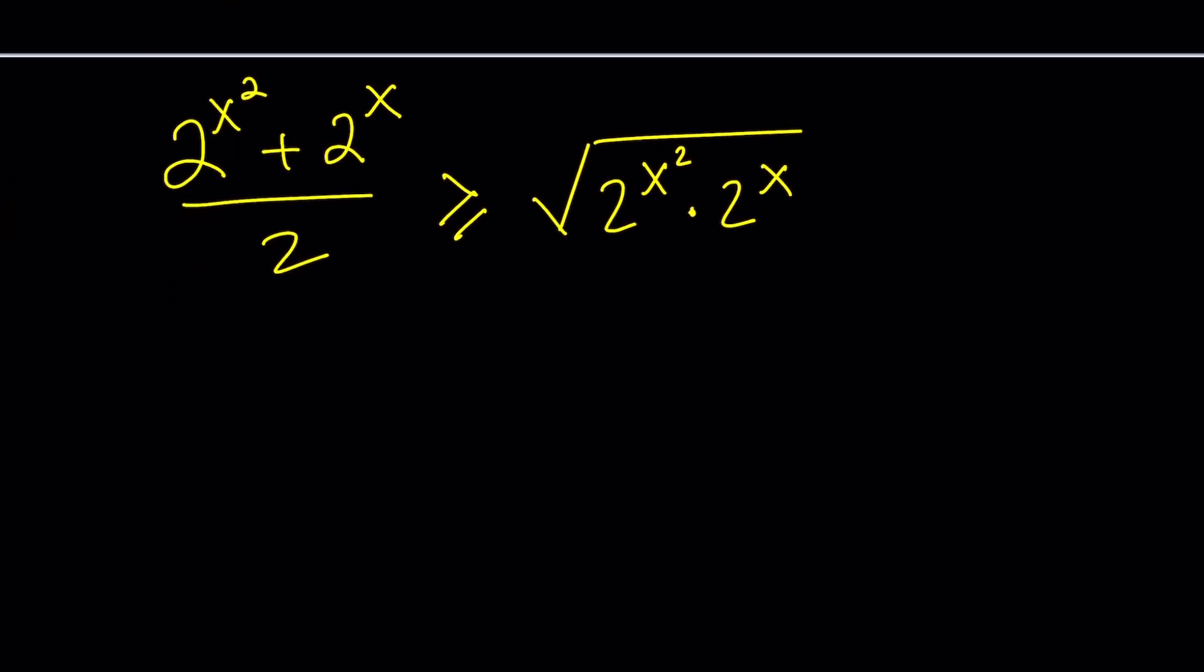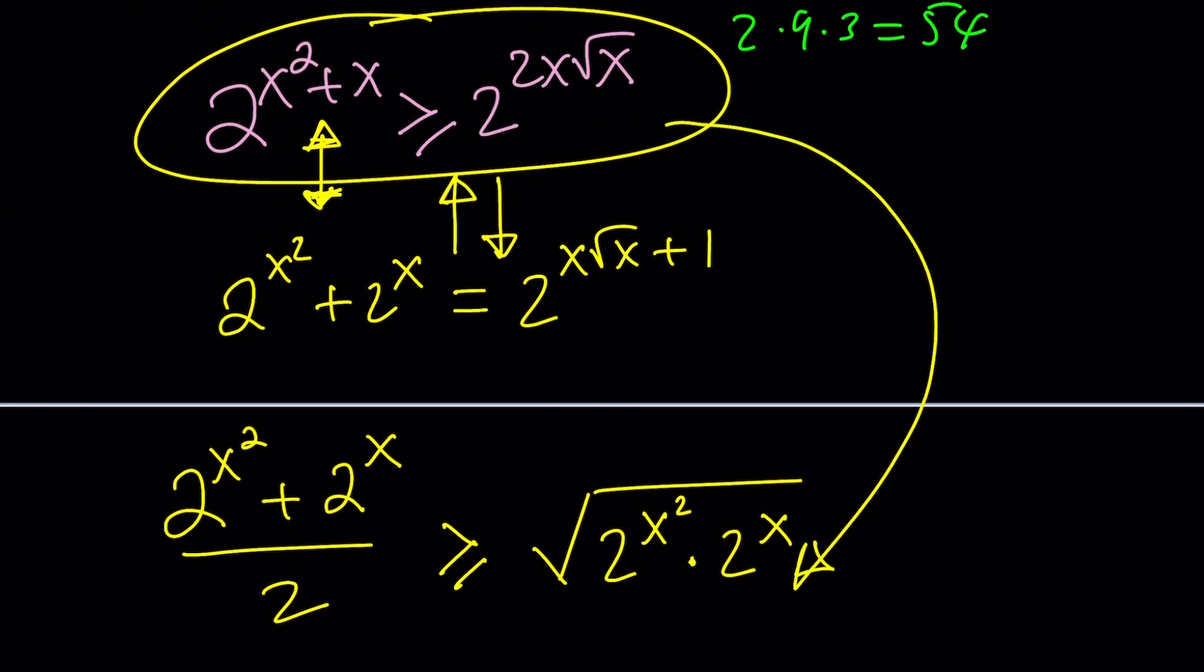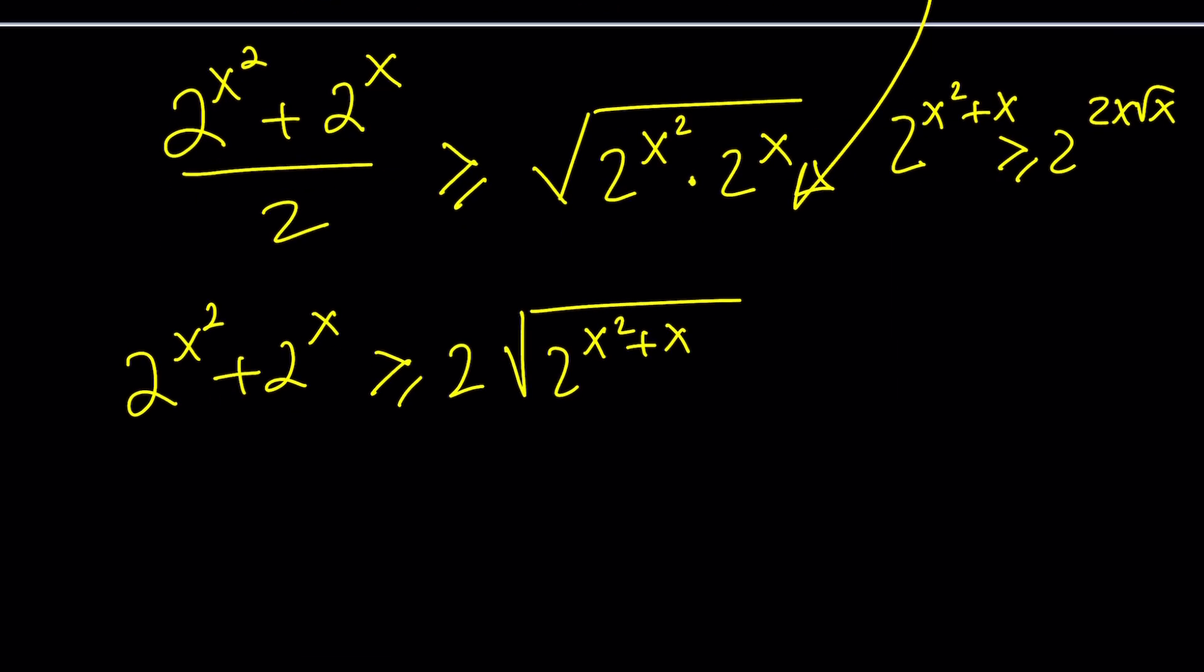Let's multiply both sides by 2. Now, 2 to the X squared plus 2 to the X is going to be greater than or equal to 2 times the square root of 2 to the X squared times 2 to the X, which definitely can be written as 2 to the X squared plus X. I can add the exponents because they are being multiplied. And guess what? This is the perfect time to use this.